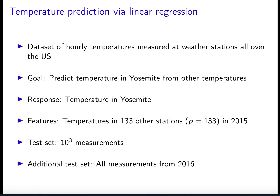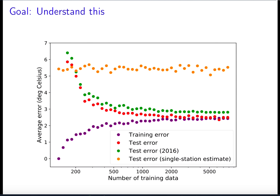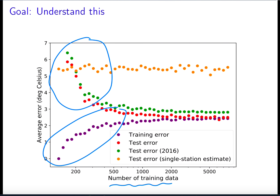To motivate this, let's go back to the example where we wanted to predict the temperature in Yosemite. The response is the temperature in Yosemite, and the features are the temperatures in 133 other stations at that particular time. We're trying to find a linear combination of these temperatures that gives us the temperature in Yosemite. We observed that when we don't have a lot of data, we see small training error and large test error. When we have more data, the training and test errors are very similar. The goal in this video is to characterize and understand why this happens.